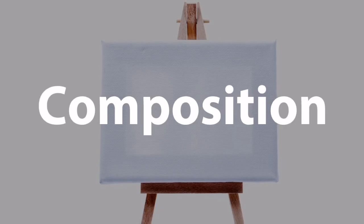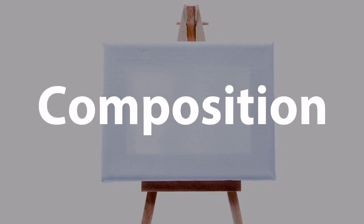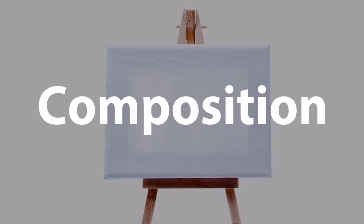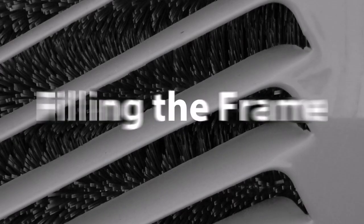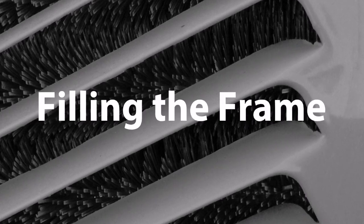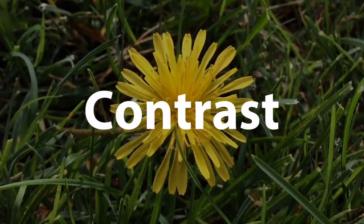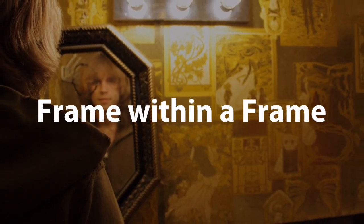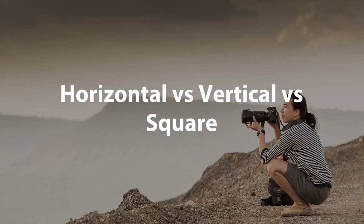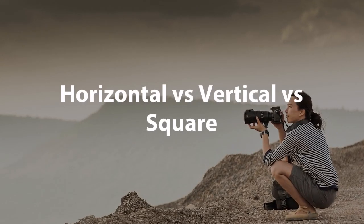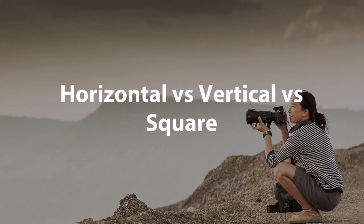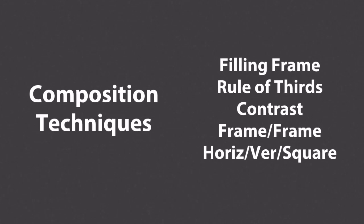Another skill to have to make impacting pictures is composition — the idea of where we're going to place the things that we see through the viewfinder and lens of our camera. One technique of composition is filling the frame. Another is the rule of thirds. And contrast, as well as a frame within a frame. And lastly, which way should my picture be? Horizontal? Vertical? Should I have it cropped square? These techniques are ways that you can compose items within the frame of a camera to create impacting art.